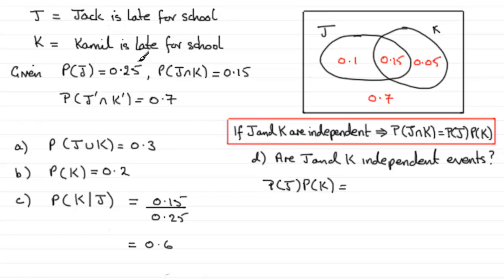well, probability of J was 0.25, so we've got 0.25 multiplied by the probability of K, which was 0.2 from Part B. And if we work that out, what we get is 0.05.